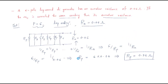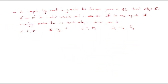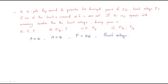Next problem: a four-pole lap-wound DC generator has developed power of 3 watts. Number of poles is 4, and since it is lap winding, number of parallel paths equals 4. It generates output power of 3 watts. The voltage across the brush is E volts. If one of the brushes is removed, and the machine is operating with the remaining brushes, what is the brush voltage?